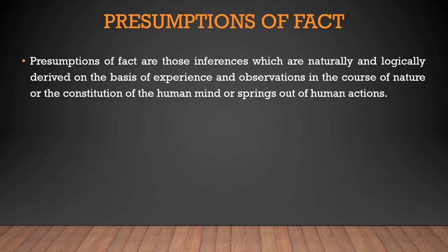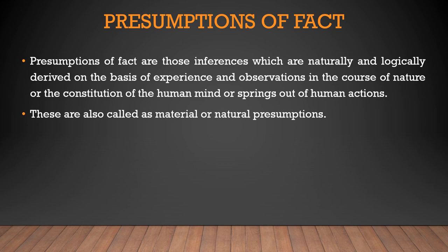The first one is presumption of fact. These are those inferences which are naturally and logically derived on the basis of experience and observations in the course of nature, or the constitution of the human mind, or springs out of human actions. For example, if at a crime scene a person is standing before the dead body with a knife in his hand, it is presumed that he has committed a murder. So these are also called material or natural presumptions.